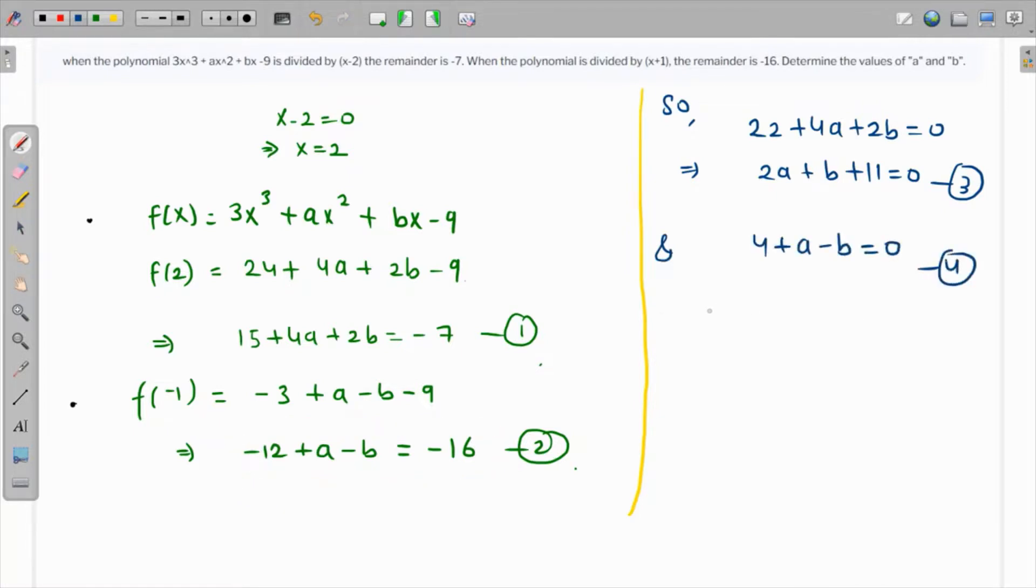We can add equations 3 and 4. The benefit is the b and negative b will cancel, so we'll get the value of a right away. If we add: 11 + 4 is 15, and 2a + a is 3a = 0. From here, 3a = -15, so a = -5.